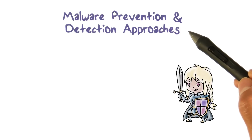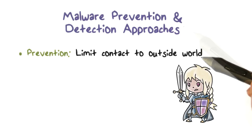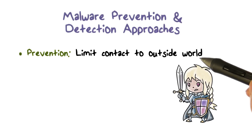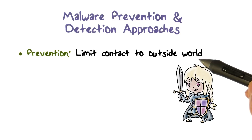Let's look at the countermeasures. The first is prevention. For example, we can limit the content of a computer to the untrusted outside world, meaning that it would not accept documents, programs, or any active contents from other computers.